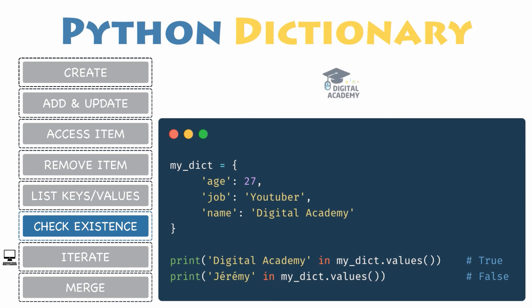And this is exactly the same when you want to check if a value is inside the dictionary, except that you will use the values function. For instance, checking whether digital academy is a value of my dictionary will return True, but Jeremy will not.